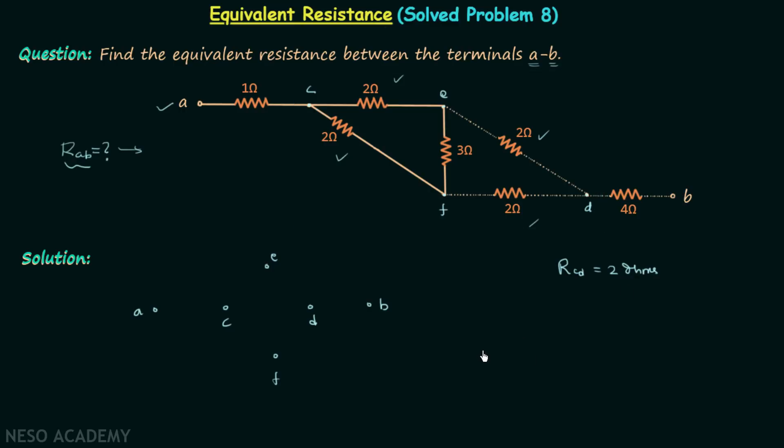Therefore, between A and C we have a one ohm resistor, and between D and B we have a four ohm resistor.